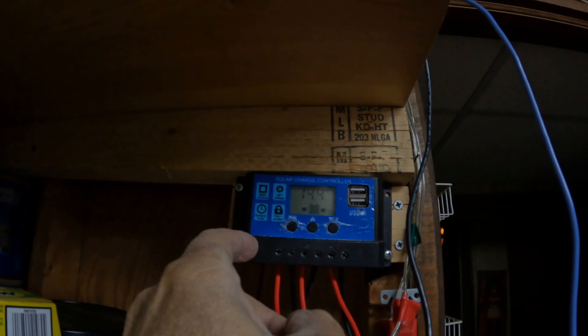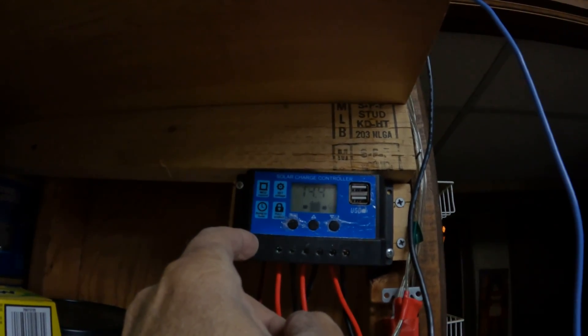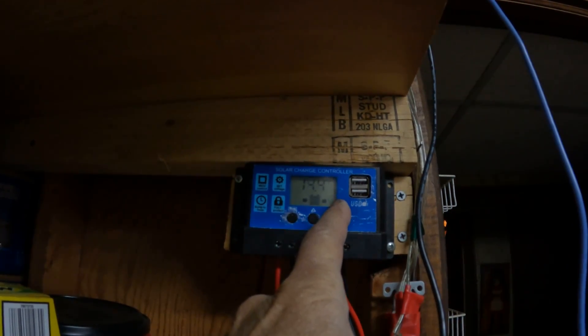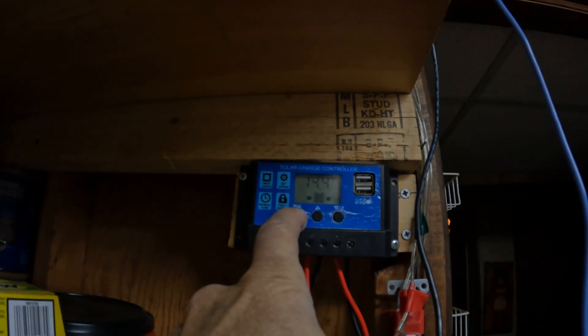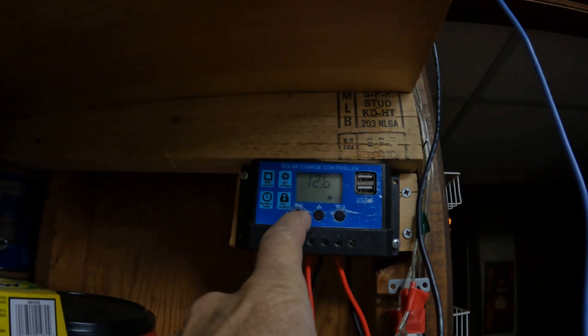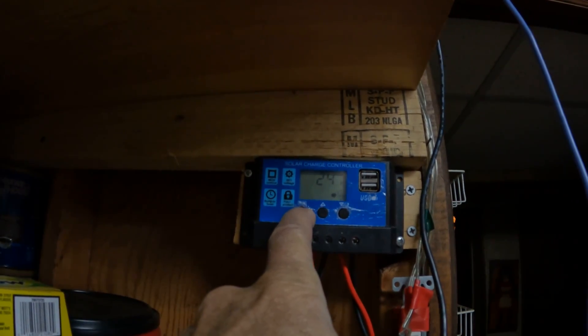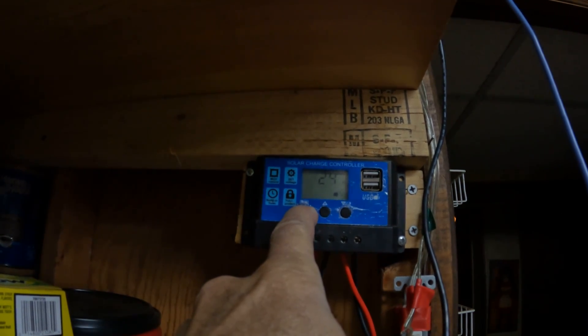I want to set this for three hours. It's set for 24 hours right now. You hit this button once, again, again, and one more time. Now I'm on 24. I hold it down until the 24 blinks.